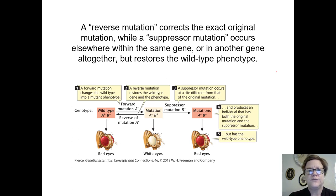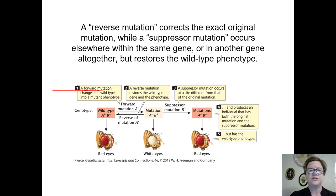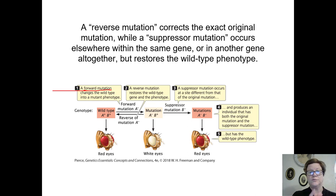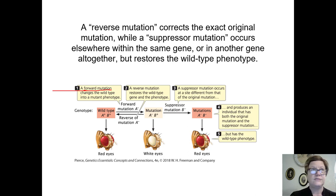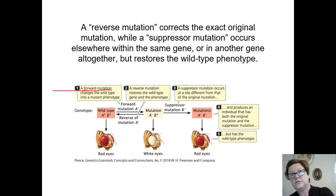A forward mutation is a general term that means the original mutation — you have a normal allele and then there's some kind of mutation and it becomes mutant. The DNA is changed. It doesn't matter what the effect is on the protein or phenotype. A forward mutation is the original mutation that takes you from a normal to a mutant allele.